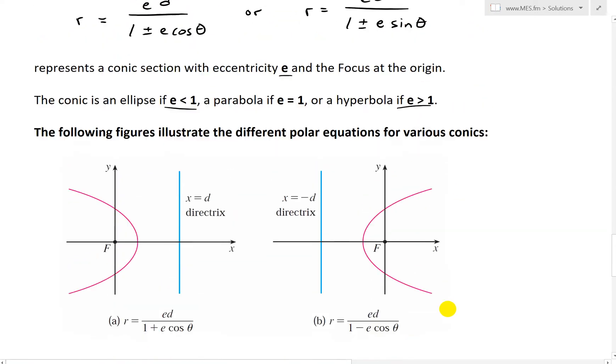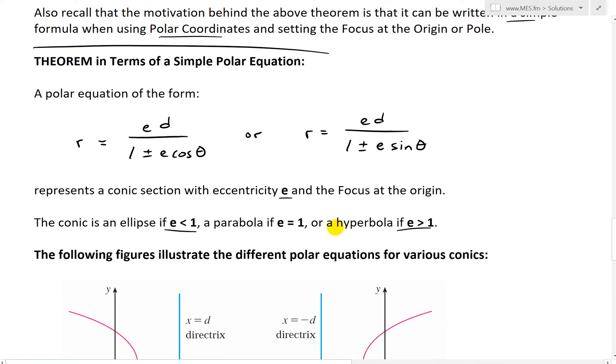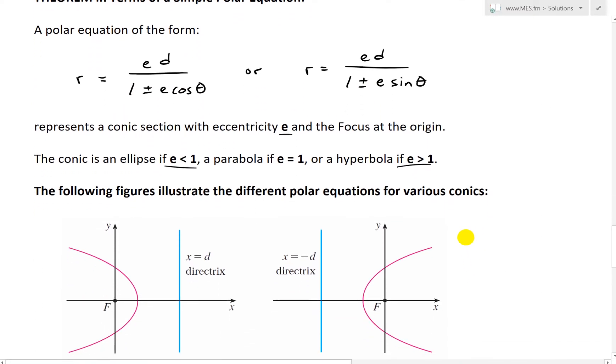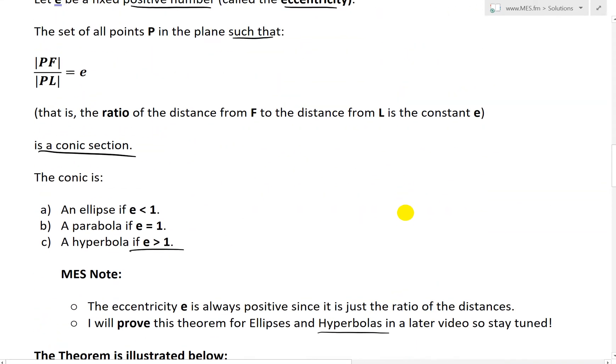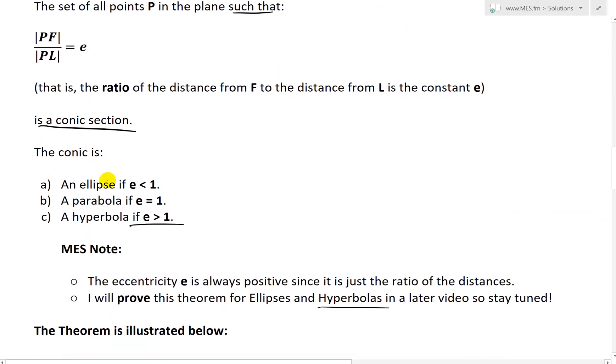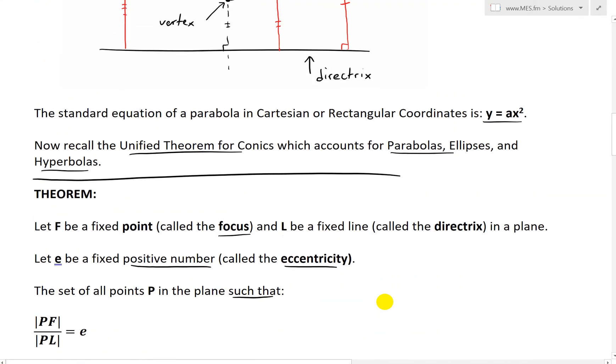And again, the motivation is so that we could write all three theorems into just one equation in either of these forms in polar equations, so that is the benefit of having this unified theorem. And again, I'll go over when, for ellipses, E is less than one, and hyperbolas when E is greater than one, in later videos, so stay tuned.